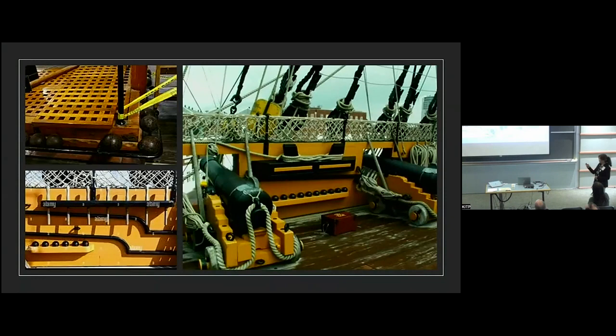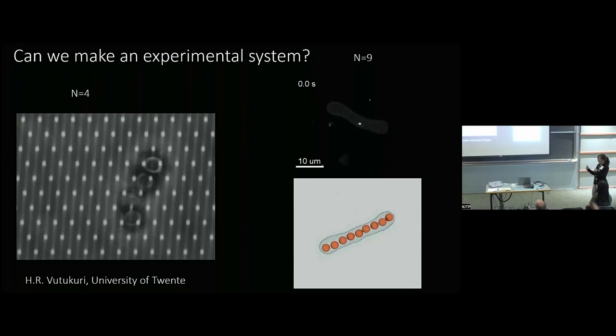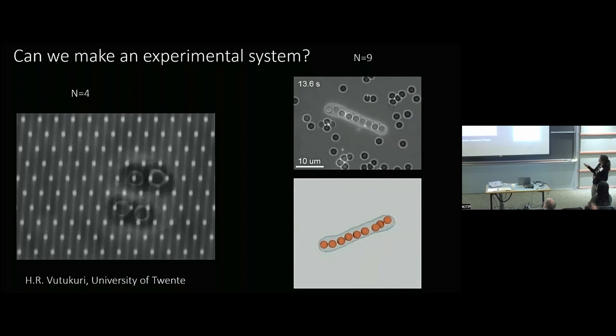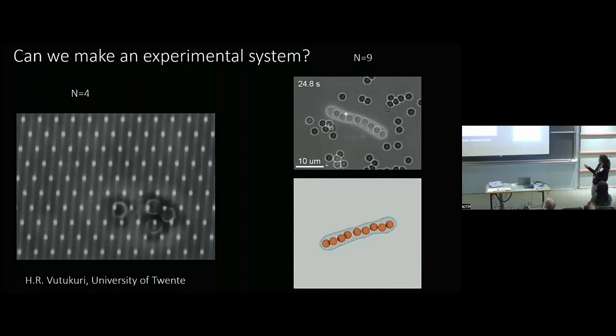We also asked ourselves: can we make an experimental system? This is work with Raoul Pouderoijen — he was able to make giant unilamellar vesicles and put polystyrene or silica spheres inside. We looked at these different conformations and found that by just changing the osmotic pressure on these vesicles, you can go from compact clusters to plate-like clusters to linear clusters. We also did simulations for these and could go up to nine particles. With more particles, the sausage doesn't become stable, and they just break, both in simulation and in experiments.